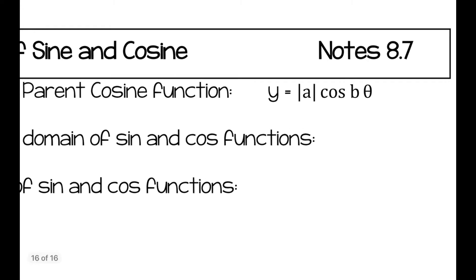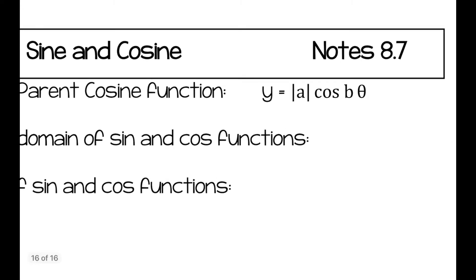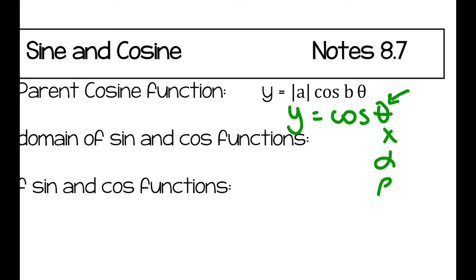With the cosine function, same thing — you're going to have y equals a cosine b-theta. Now theta is just an input variable. It could be x, it could be alpha, it could be beta. Those are the common ones used for angles. I usually use theta, but it doesn't really matter. It's just an input variable, and the function will change according to what a and b are.